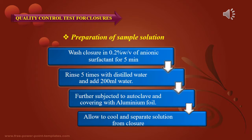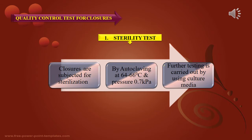This solution is then used for quality control tests for closures. The first test is the sterility test. Closures are subjected to sterilization by autoclave at 64 to 66 degrees Celsius and pressure at 0.7 kilopascal. Further testing is carried out using culture media.